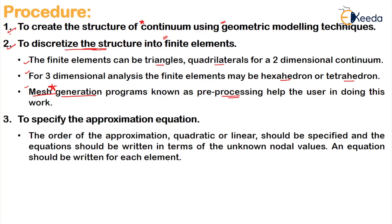Once the structure is discretized, the next step is to specify the approximation equation. Once the number of finite elements are decided, you have to specify the approximation equation for each element. The order of the approximation can be either quadratic (power 2) or linear (power 1), and the equation should be written in terms of the unknown nodal values.